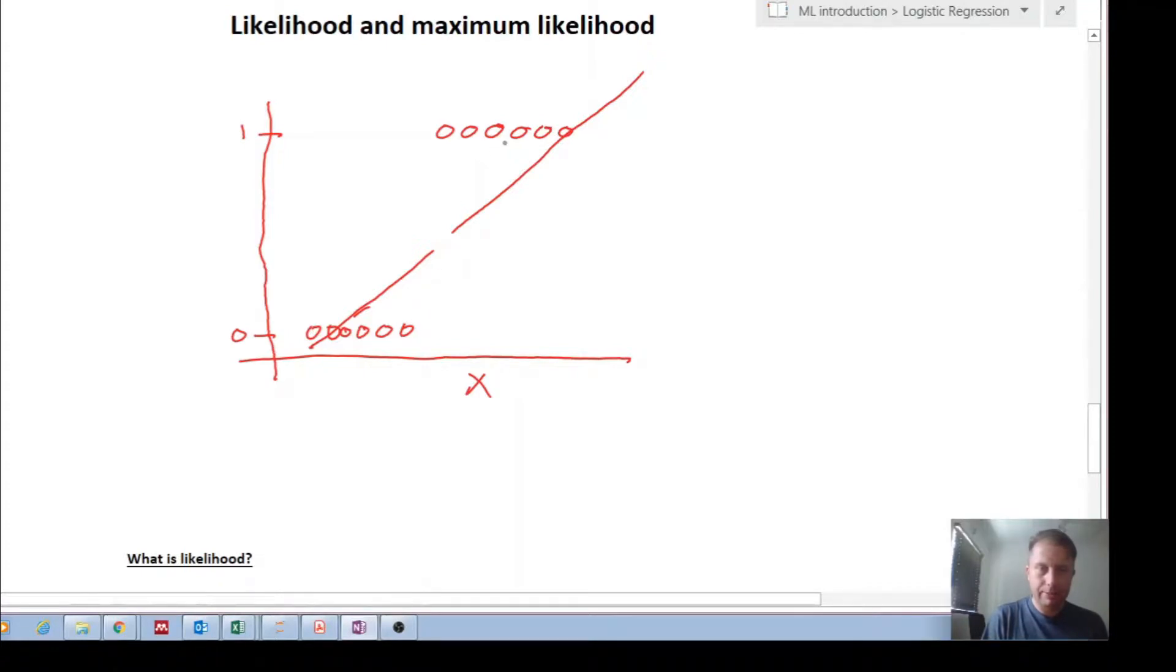So what we wanted is a model that closely hugged the data. If the actual output is a zero, then the model will predict a zero as close as possible. And if the actual output is a one, then our model will predict as close as possible to one.